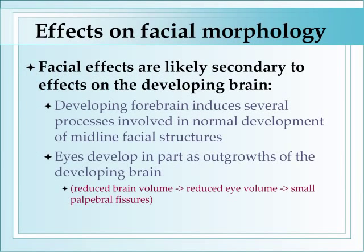Facial effects that allow us to identify characteristics helpful in diagnosis are likely secondary to effects on the developing brain, at least in part. This is because the developing forebrain induces several processes involved in normal development of midline facial structures. Also, eyes develop primarily as outgrowths of the developing brain, so if brain volume is reduced as a result of alcohol exposure, eye volume would also be reduced. The way we see that manifest on examination is in the form of small palpebral fissures.